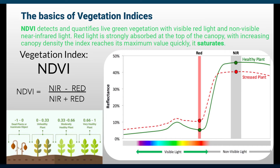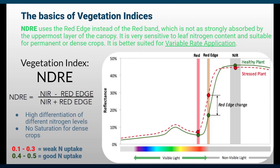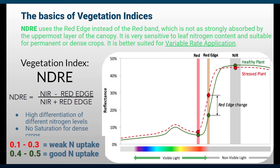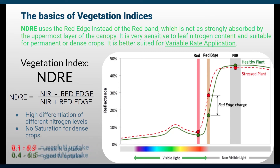The NDRI uses the red edge instead of the red wavelength, which allows it to assess all canopy levels, as it is not so strongly absorbed by the topmost layer of the canopy. It is very sensitive to different nitrogen levels of the leaves and biomass across the whole growing season, making it a good choice for variable rate applications. Values between 0.1 and 0.3 indicate low nitrogen uptake and biomass, while values bigger than 0.4 represent healthy, well-fed crops.